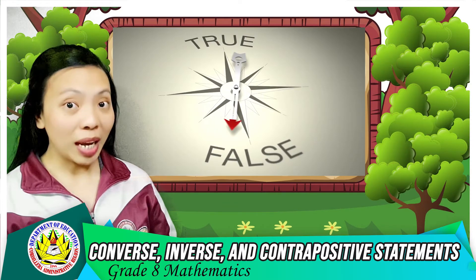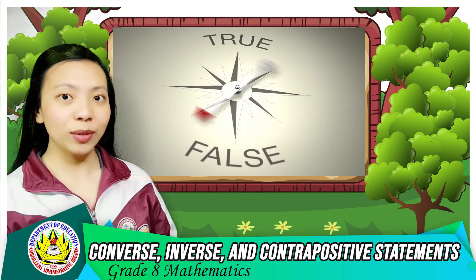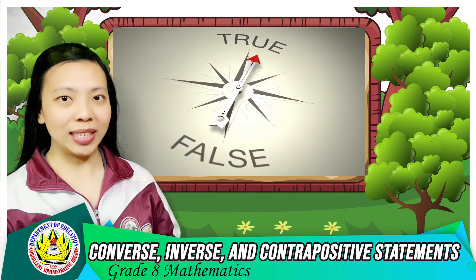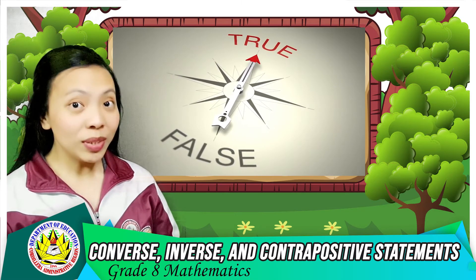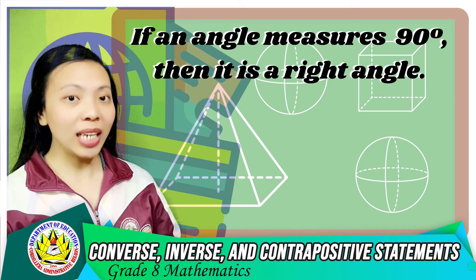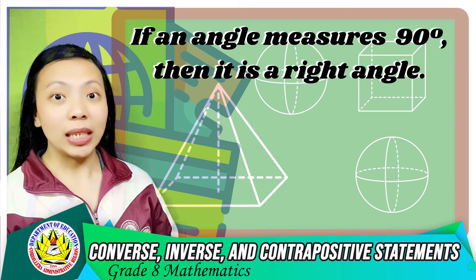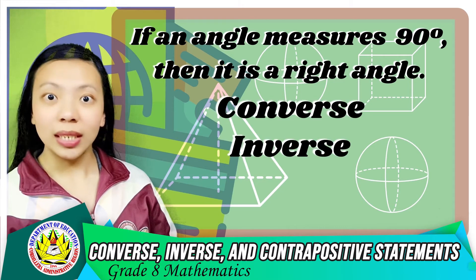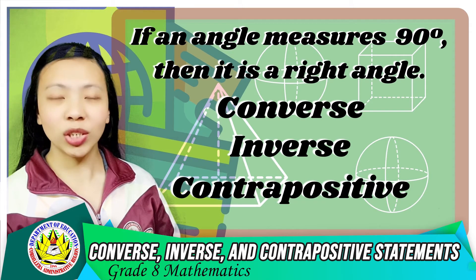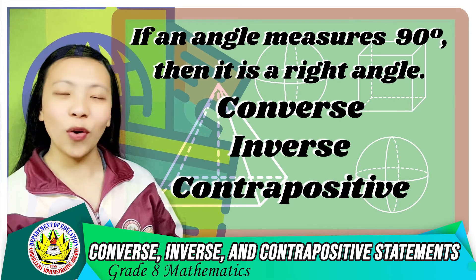It's now time to apply the definitions and truth values of a conditional and its related statements. Using the conditional: 'If an angle measures 90 degrees, then it is a right angle' — formulate its converse, inverse, and contrapositive statements, then determine whether each statement is true or false.